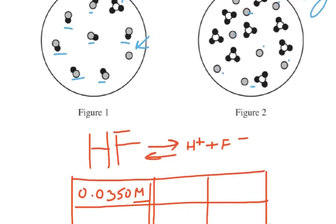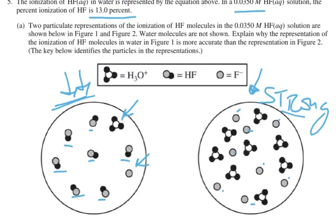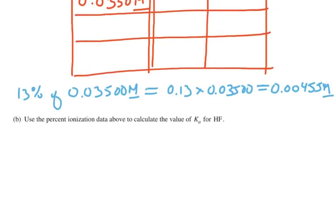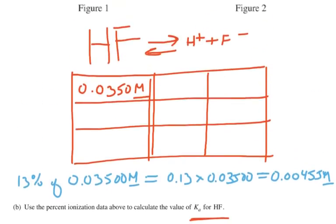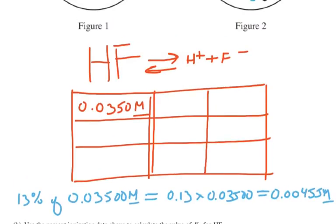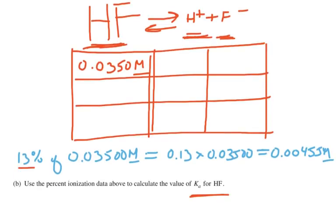The next part of this question asks us to use the fact that HF is 13% ionized to figure out the Ka. HF is breaking up into H plus and F minus — using H plus instead of H3O plus, same thing. Since it's only 13% dissociated, we can figure out what 13% of 0.0350 molar is: 0.13 times 0.035 gives us 0.00455 molar.